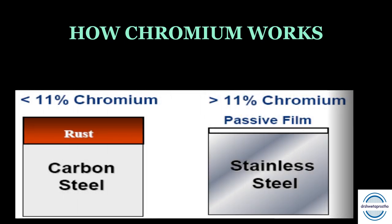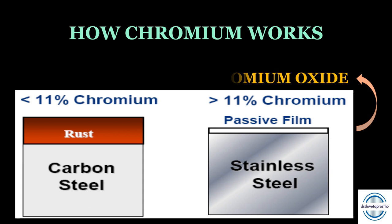How does chromium work? If the chromium content is less than 11%, there will be no adherence of the chromium oxide layer, leading to rusting of the carbon steel — the traditional steel. If the chromium content is more than 11%, a passive film of chromium oxide is formed on the steel, and this steel with chromium is called stainless steel. If the chromium content exceeds 28–30%, chromium carbide is formed, which embrittles the steel.